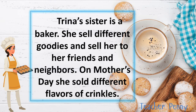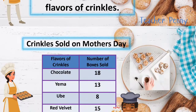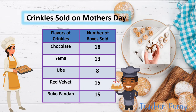Here is an example. Trina's sister is a baker. She sells different goodies to her friends and neighbors. On Mother's Day, she sold different flavors of crinkles. Here is the sample table for the situation: Crinkles Sold on Mother's Day. In the first column, we have flavors of crinkles, and the second column is the number of boxes sold.